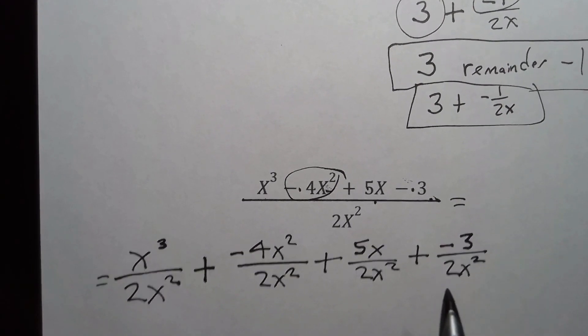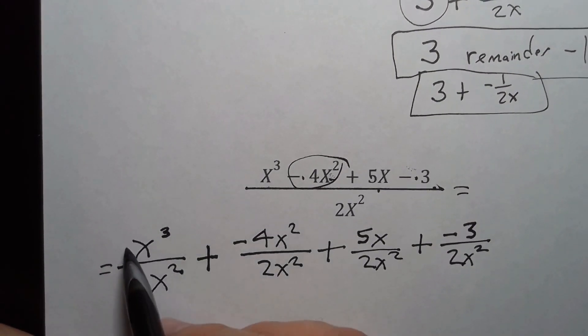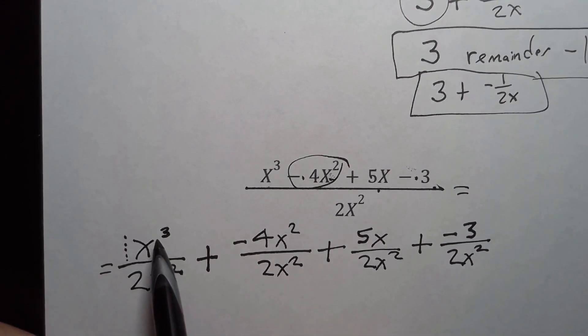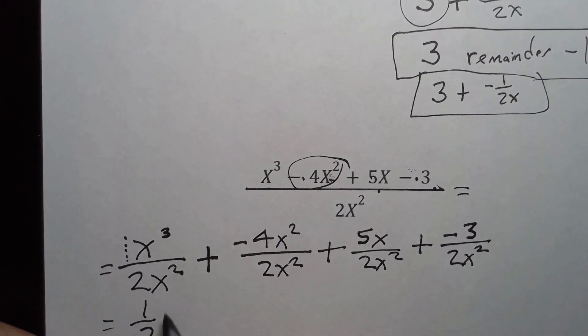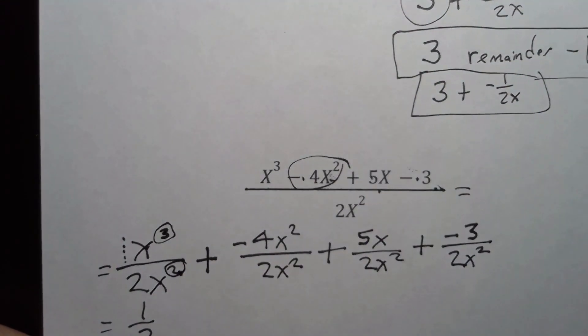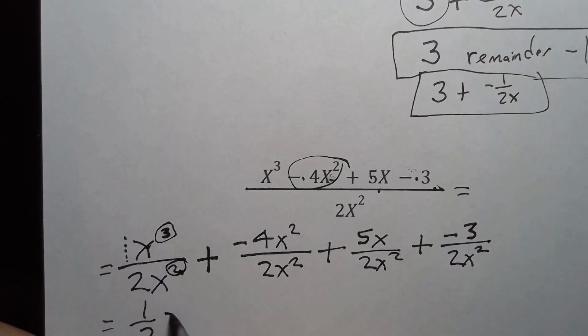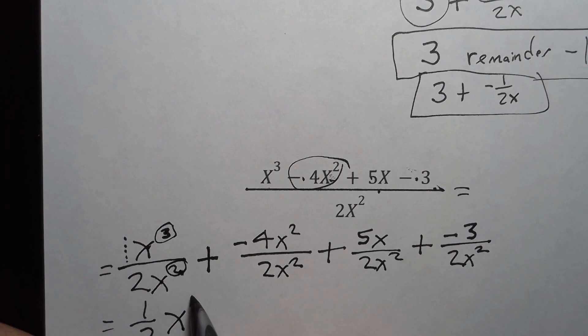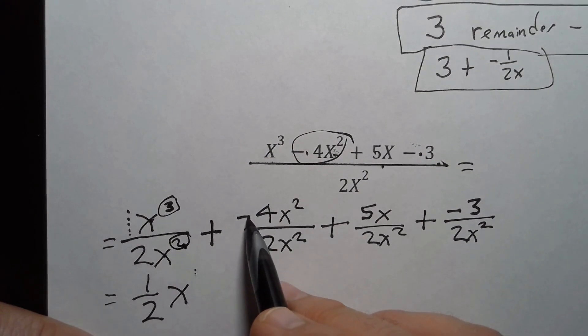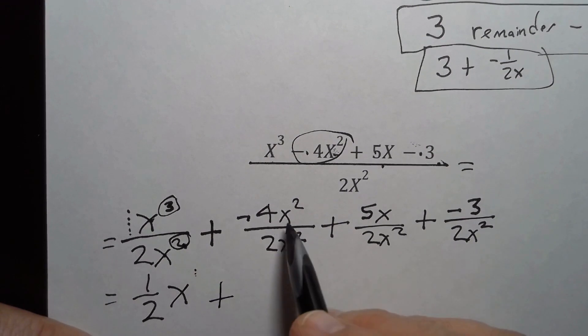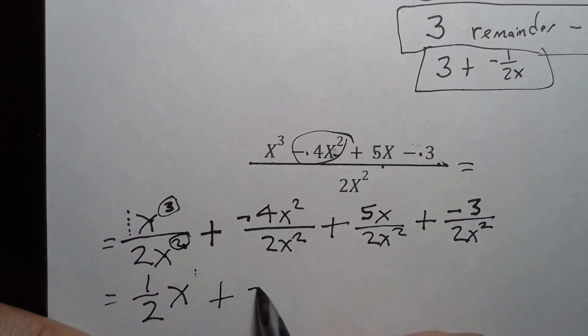Now let's do a little simplification. Remember there's an invisible 1 in front of any x that doesn't have anything showing, so this just becomes 1/2. I've got x³ over x², and we know that I take this power and subtract that power. So this becomes x to the 1 power, but I don't usually write the 1. So it's 1/2 x. Then I can do negative 4 over 2 - 2 goes into 4 two times, so it's negative 2.